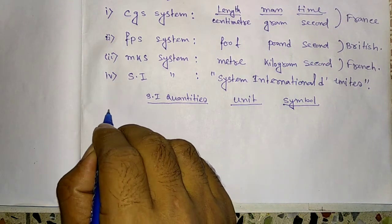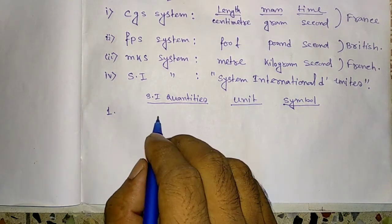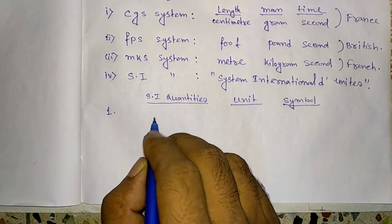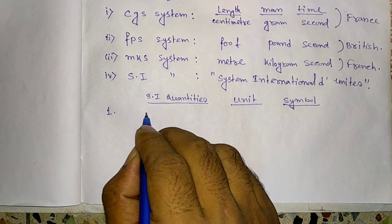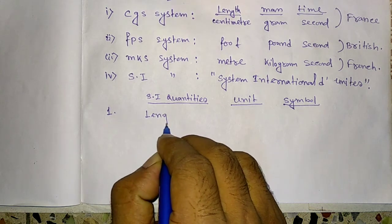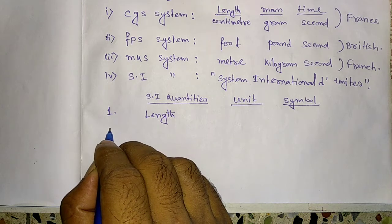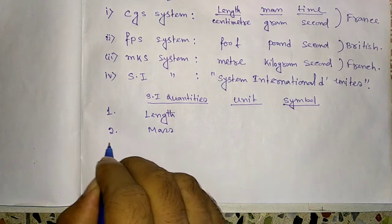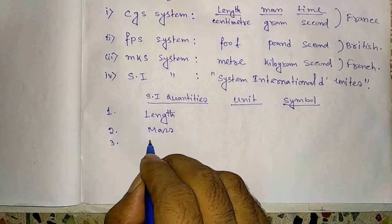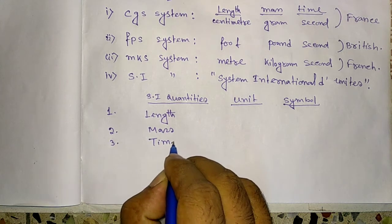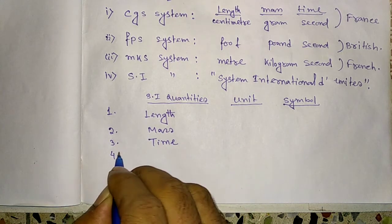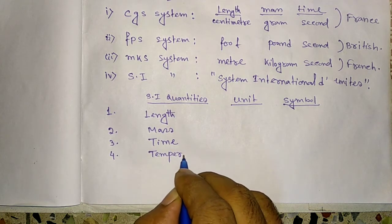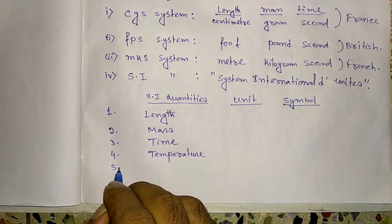Number one, length. Number two, mass. Number three, time. Number four, temperature.